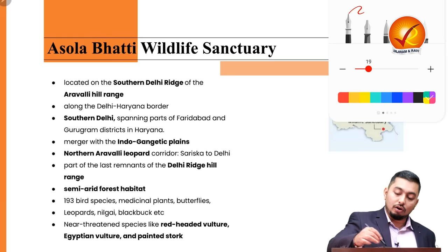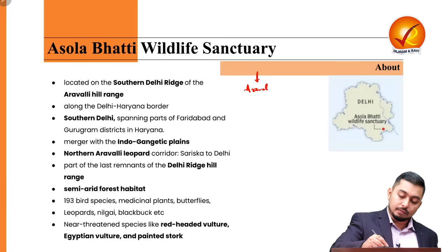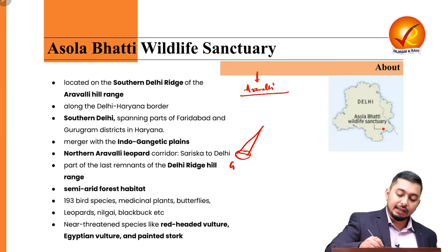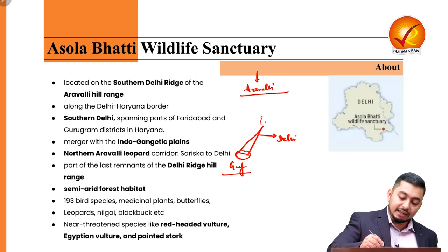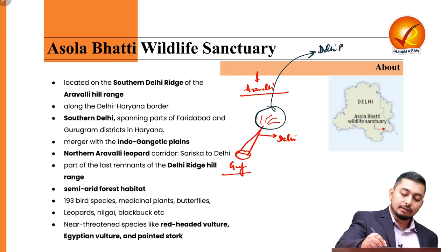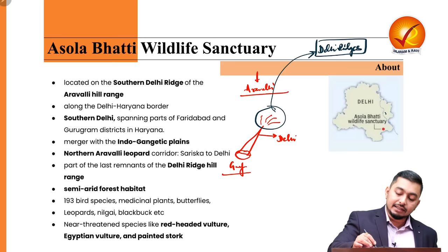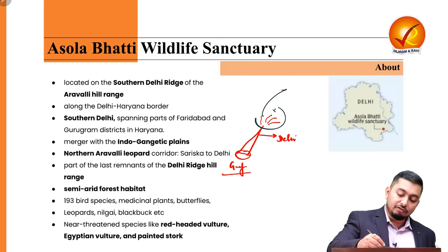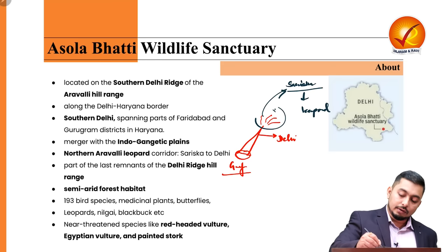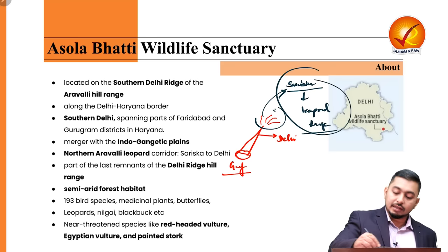The sanctuary is an extension of the Aravali range. The Aravalis are broader in Gujarat and gradually narrow as they approach Delhi, where they break into multiple ridges called the Delhi Ridges. Along these Delhi Ridges is situated the Asola Bhatti Wildlife Sanctuary. It is also part of the Sariska leopard corridor.